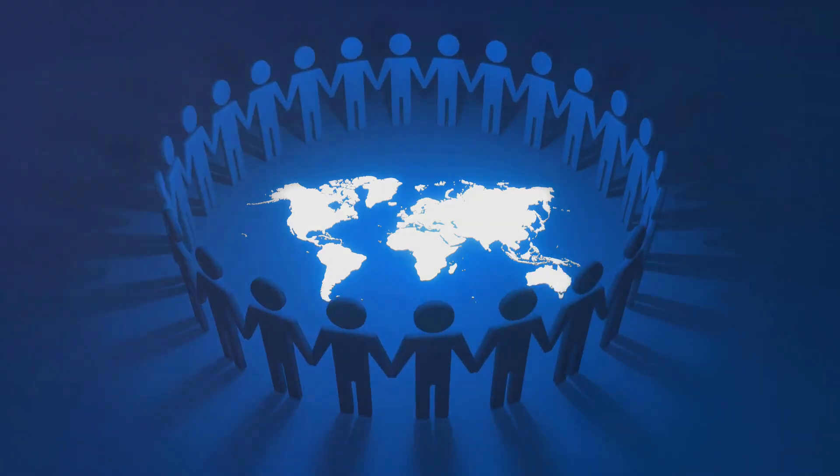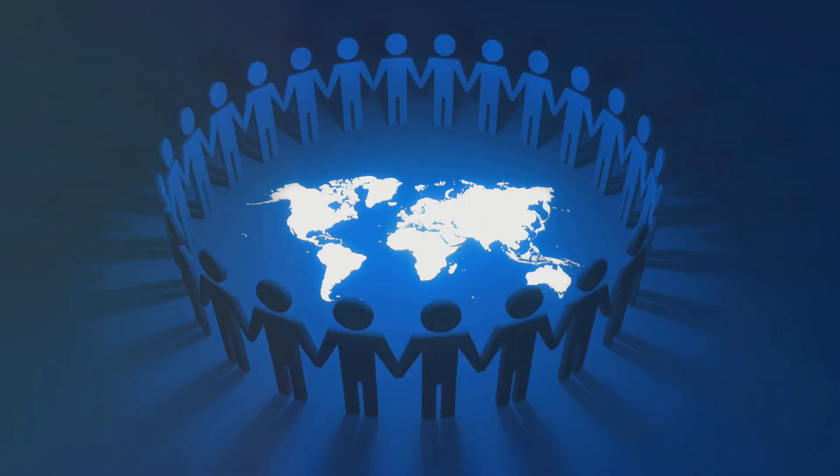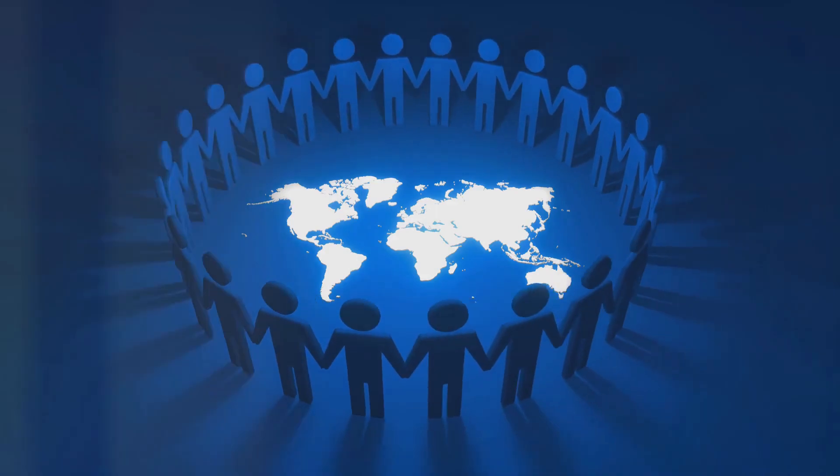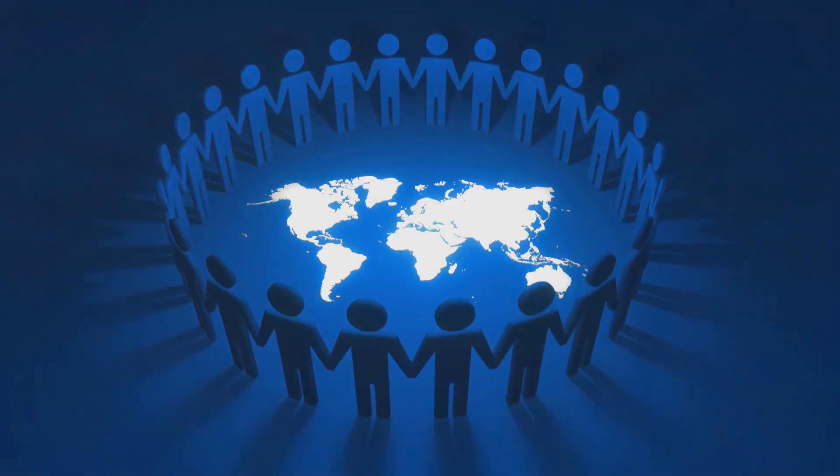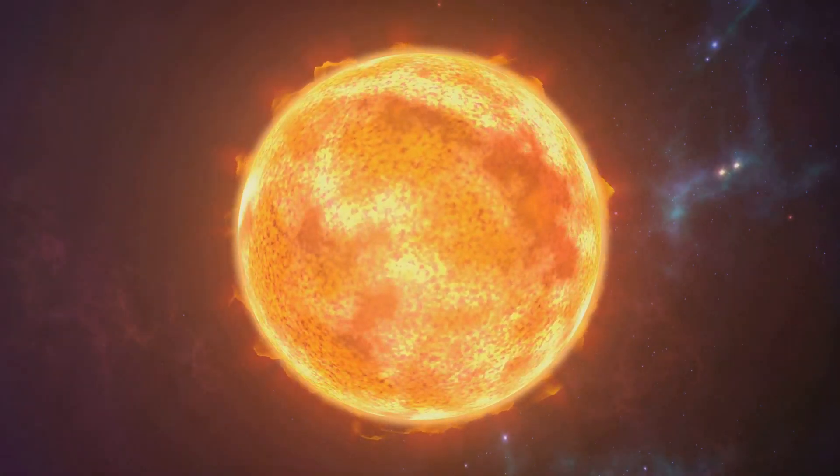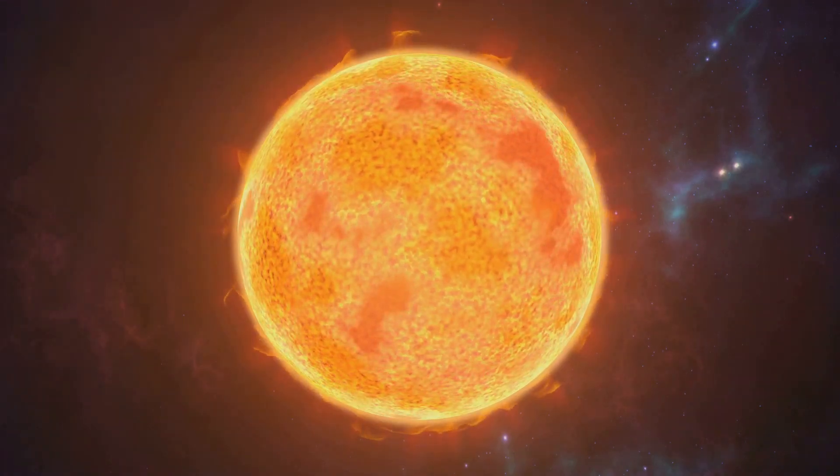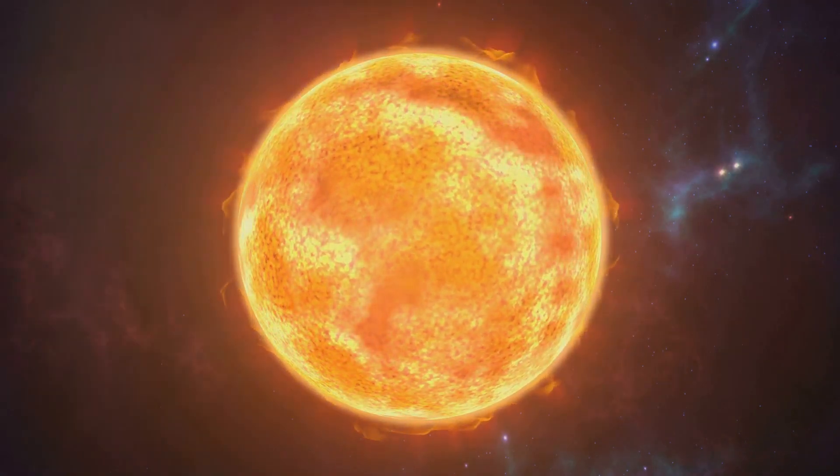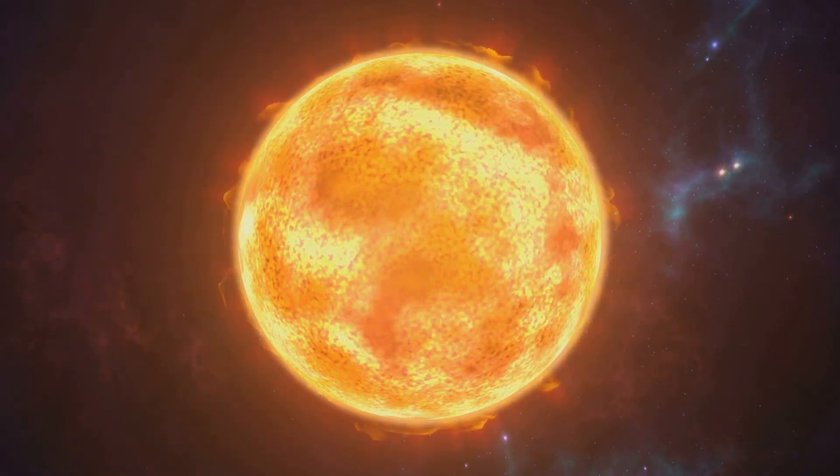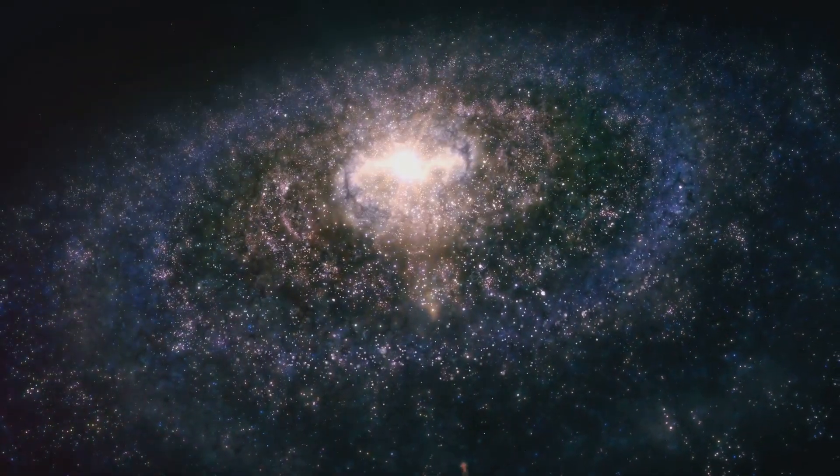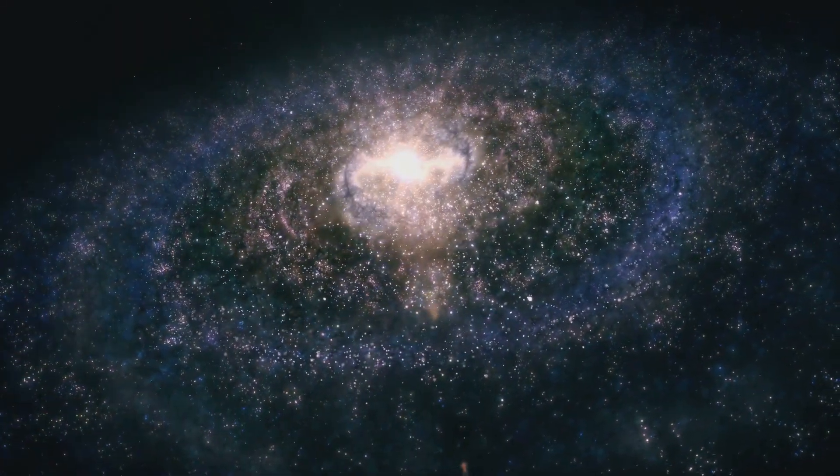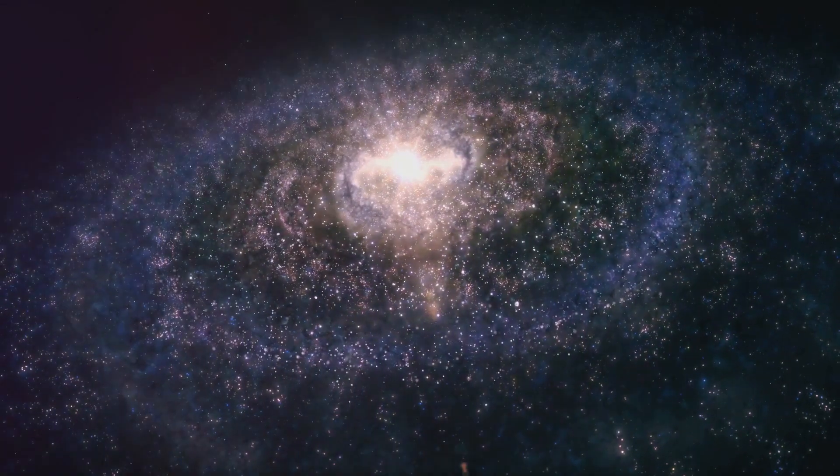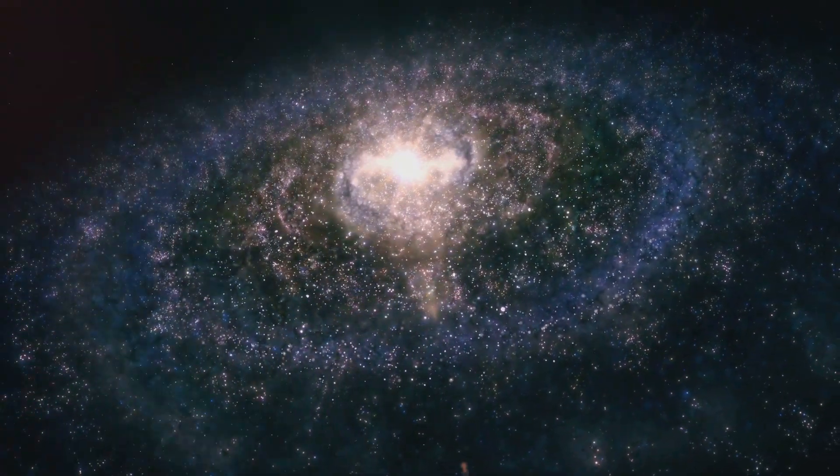A Type 1 civilization, also known as a planetary civilization, can use and store all of the energy available on its planet. Then we have a Type 2 civilization, or a stellar civilization, which can harness the total energy of its planet's parent star. Finally, a Type 3 civilization can control energy on the scale of its entire galaxy.